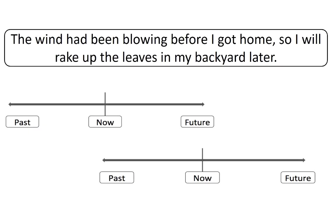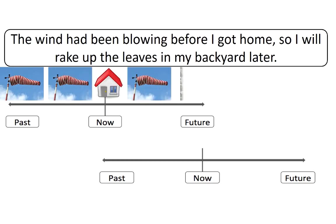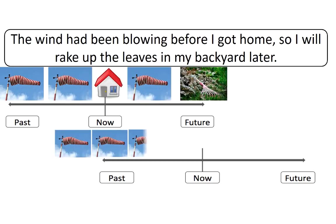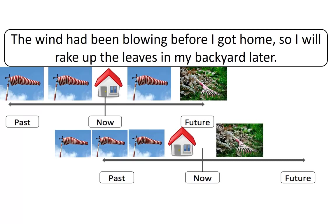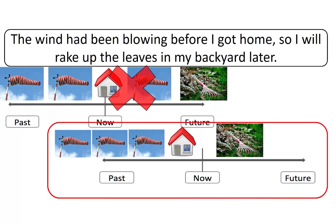Let's try something a little different. I've given you the correct sentence with the correct verb tenses: 'The wind had been blowing before I got home, so I will rake up the leaves in my backyard later.' Now I'm going to show you two timelines and you need to pick the correct one that matches the sentence. The second one is the correct timeline. The wind had been blowing in the past before I came home. In addition, 'came' is in the past, not now.